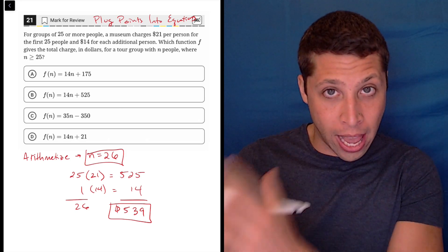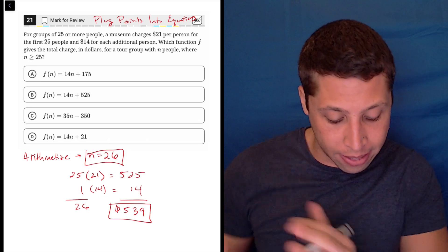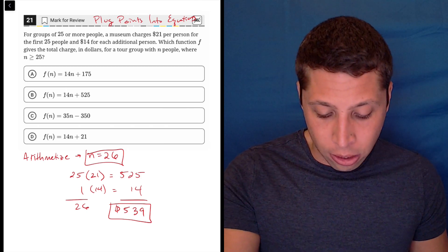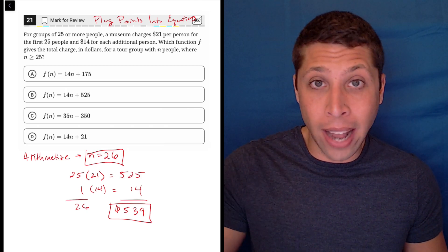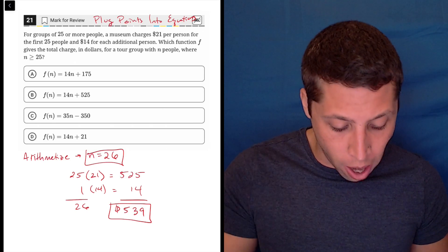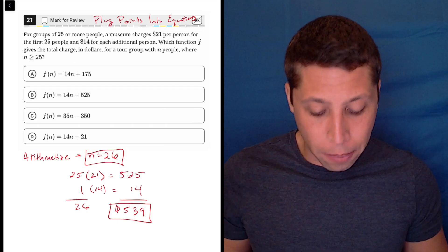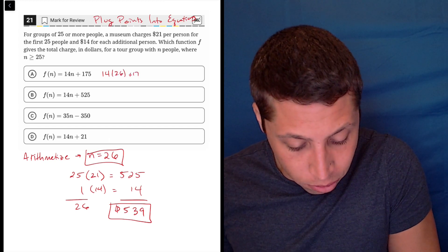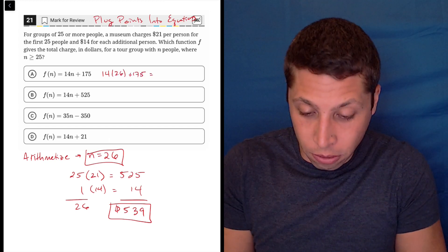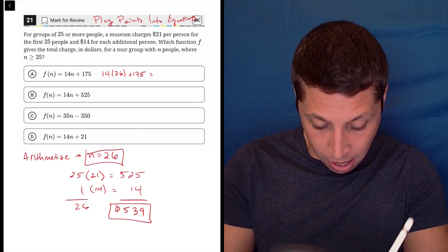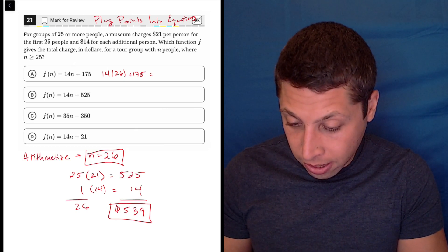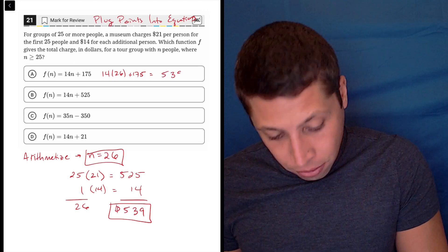So now I have a point. I have an n, an x that's kind of behaving like an x and 539 is kind of behaving like the y, the f(n) in this case. So we're just going to see if any of these equations gives me the number I want, gives me the 539 when I plug in 26. So 14 times 26 plus 175. 14 times 26 is 364 plus 175 is 539.